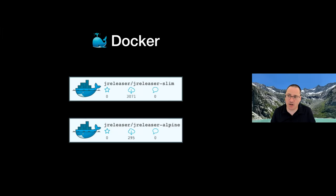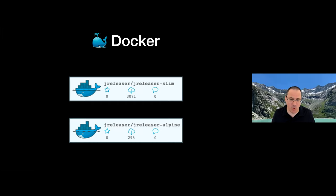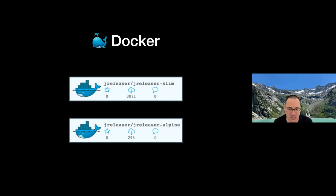We also have Docker images. The Slim version is based on Ubuntu, and the Alpine version is based on Linux Alpine. These Docker images do not support packaging for Snapcraft and Chocolatey — Snapcraft requires additional tools and settings in the image that haven't been done yet, and Chocolatey requires a Windows image.